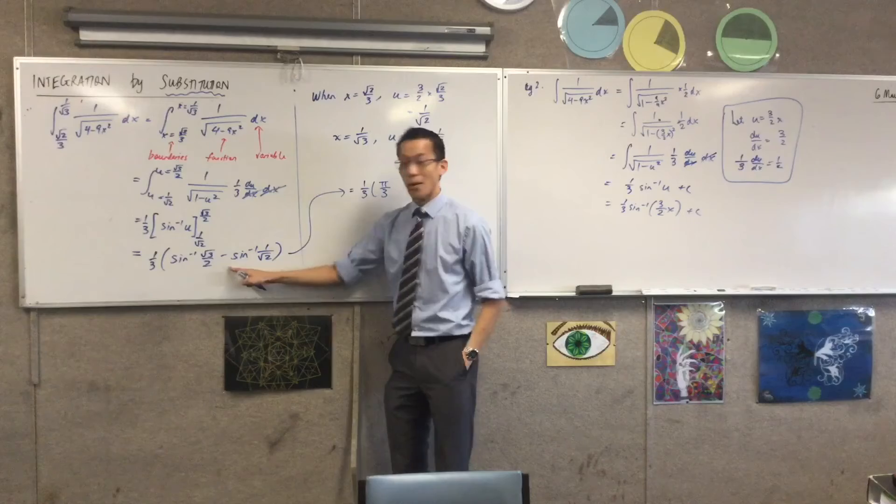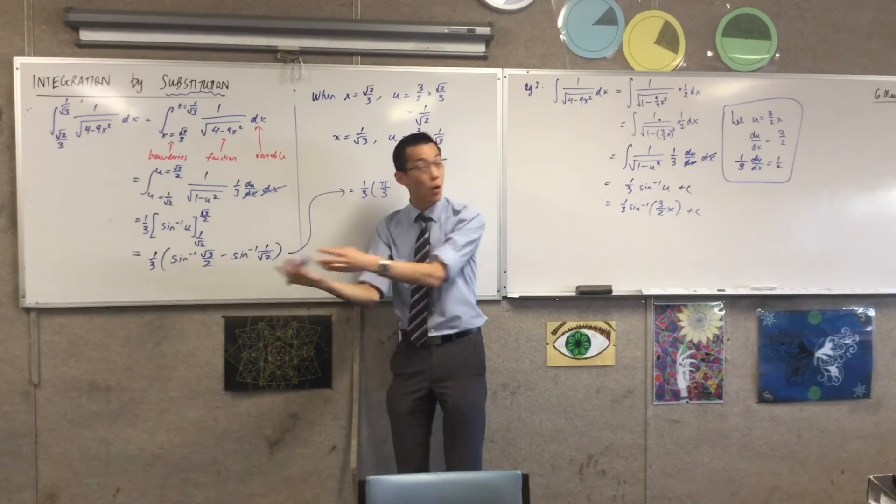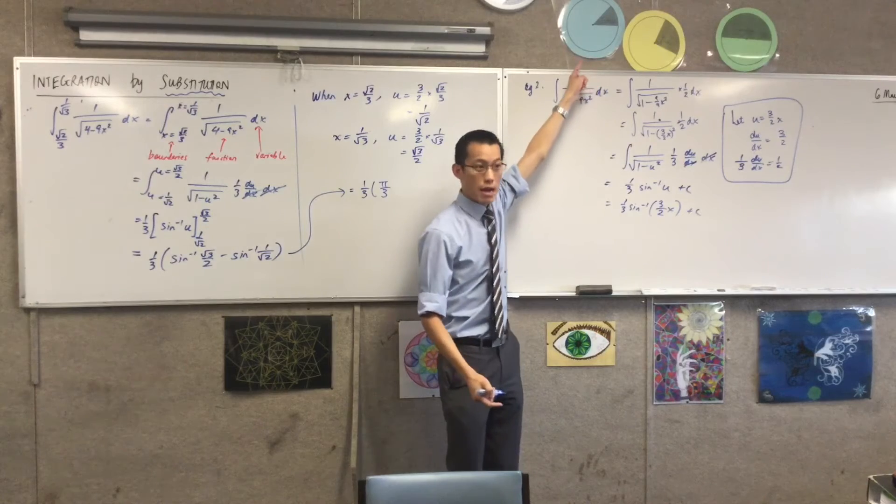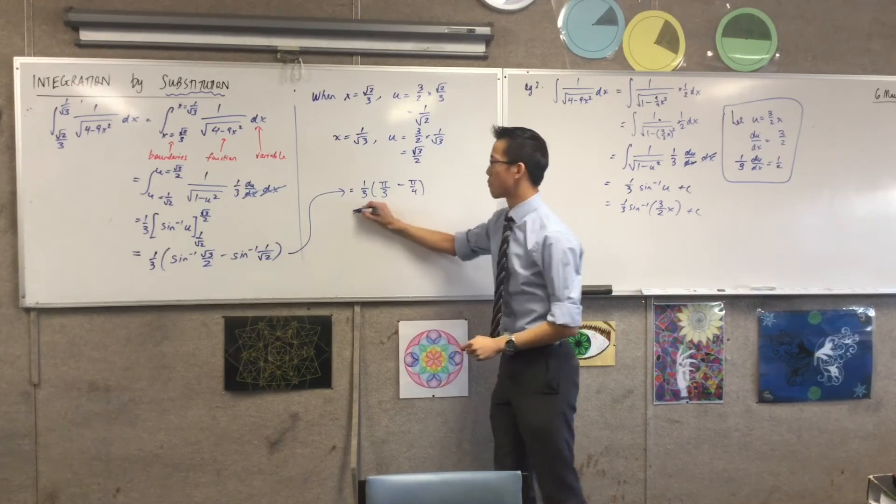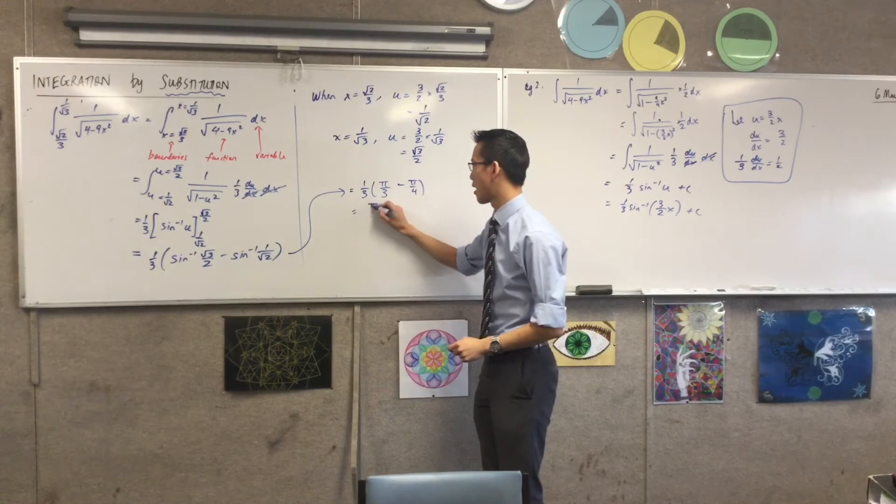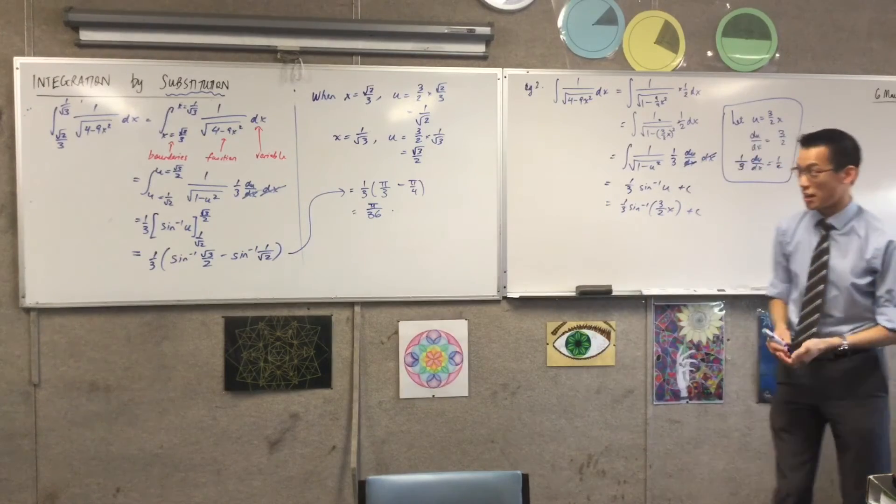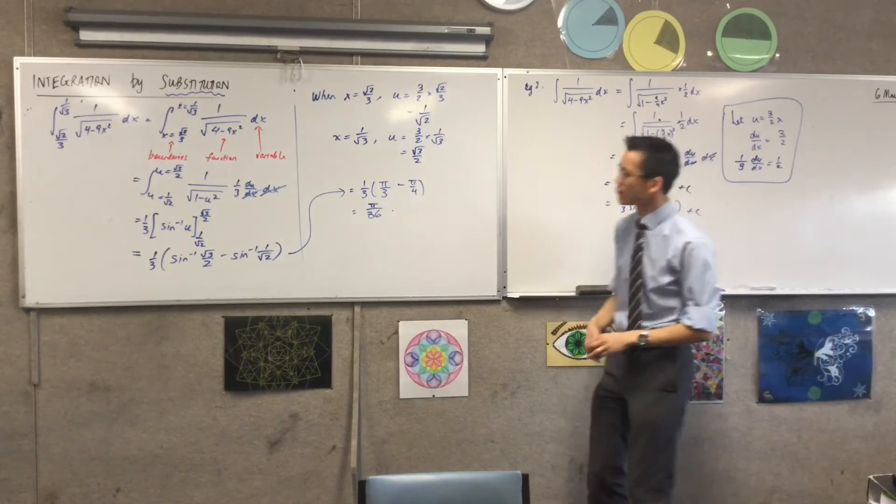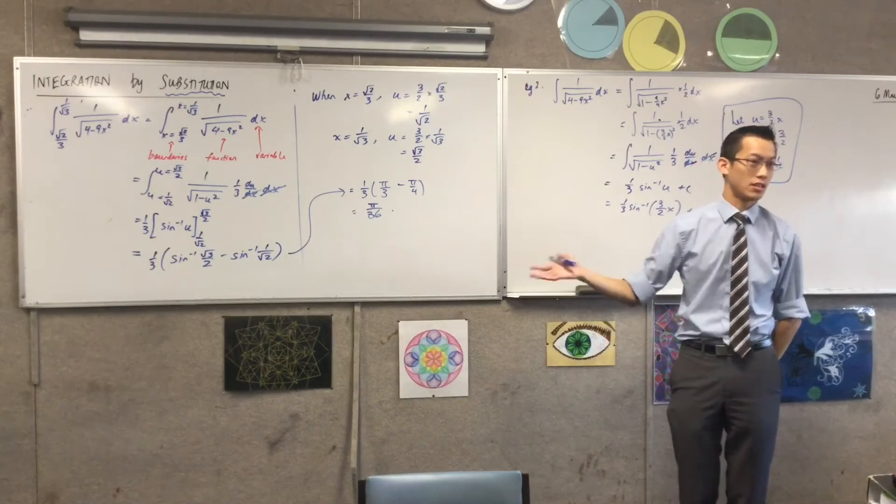And then here, what's the angle that's going to give me 1/√2? And that's 45 degrees or π/4 radians. So I'm going to take away π/4. I'm pretty sure that's going to be π/12. So that's π/36. The original question had nothing to do with an area, therefore I'm not going to say unit squared or anything like that. I'm just evaluating an integral.